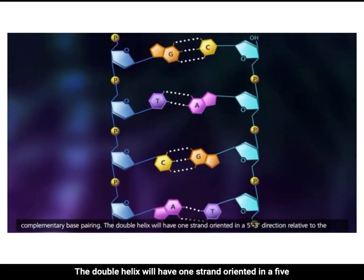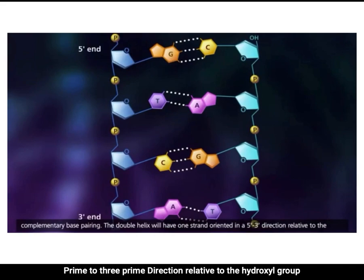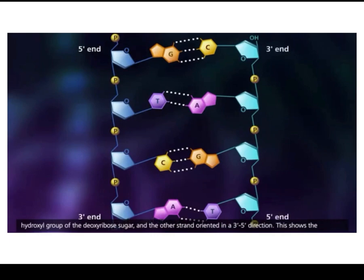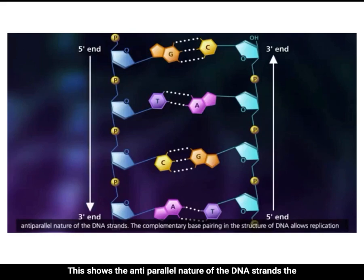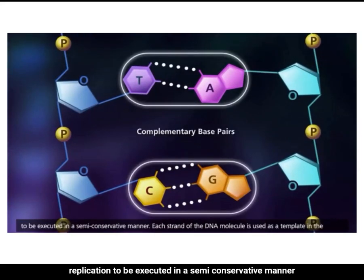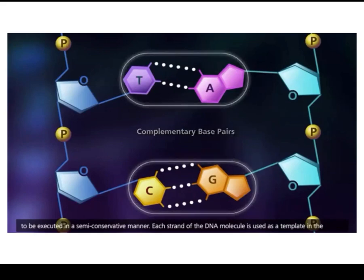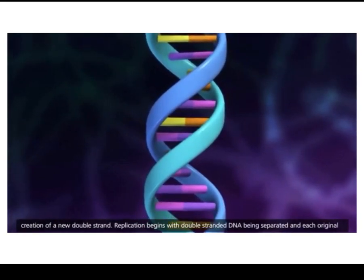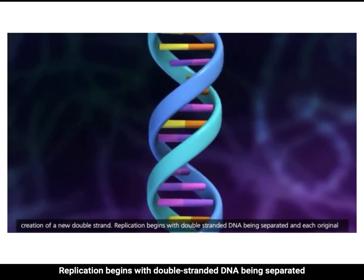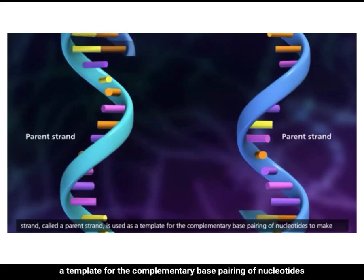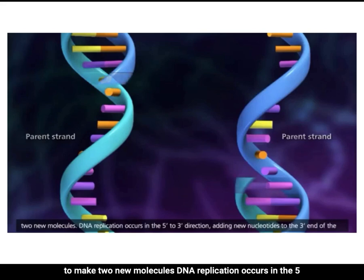Cytosine forms three hydrogen bonds with guanine, and thymine forms two hydrogen bonds with adenine — this is referred to as complementary base pairing. The double helix has one strand oriented in a 5' to 3' direction and the other in a 3' to 5' direction, showing the anti-parallel nature of the DNA strands. The complementary base pairing allows replication to be executed in a semi-conservative manner, with each strand used as a template for the creation of a new double strand.